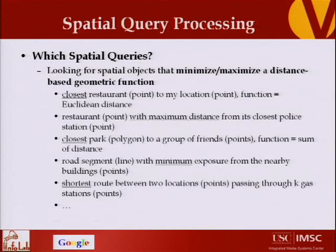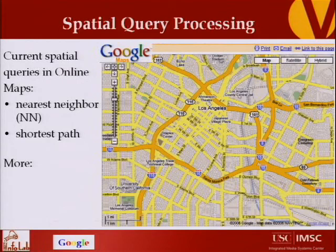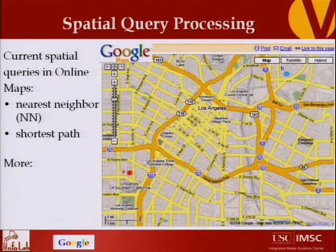These types of queries are not limited to systems like GeoDeck. They are even beneficial for online maps like Google Maps. These map systems today have the simplest form of queries: nearest neighbor — just give me the restaurants in this area — or driving directions from point A to point B. But we want more.